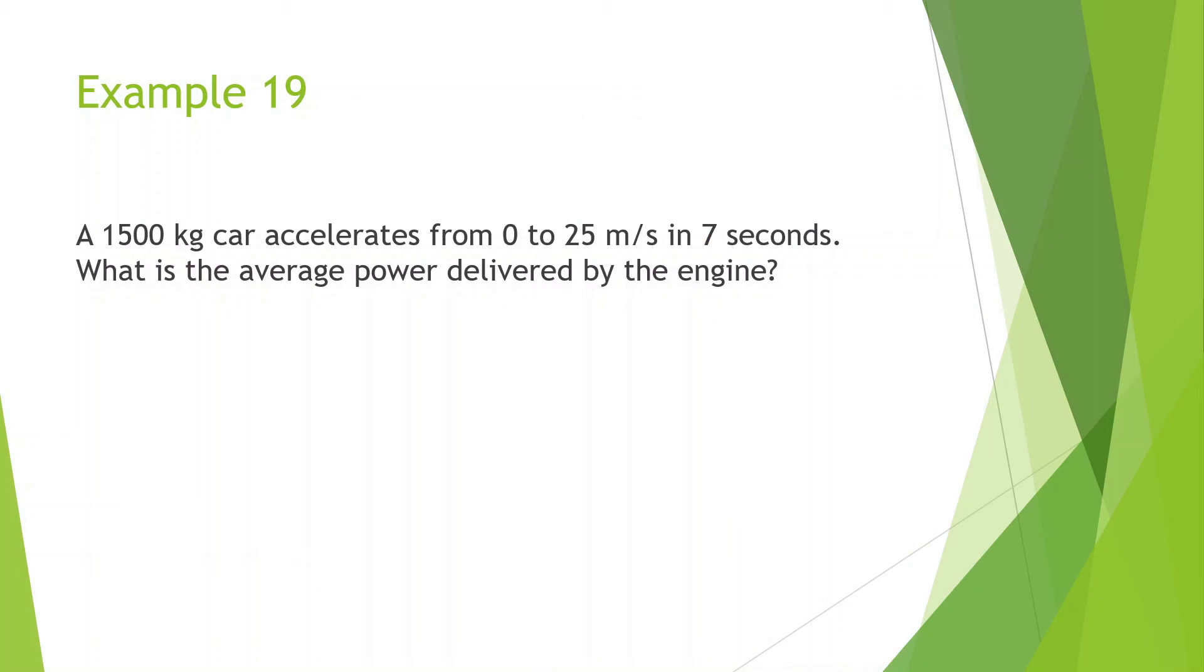Example 19. A 1500 kilogram car accelerates from 0 to 25 meters per second in 7 seconds. What is the average power delivered by the engine? Okay, so what we have here is we have this car, right? And it's going to go from 0 to 25 meters per second in an elapsed time of 7 seconds.